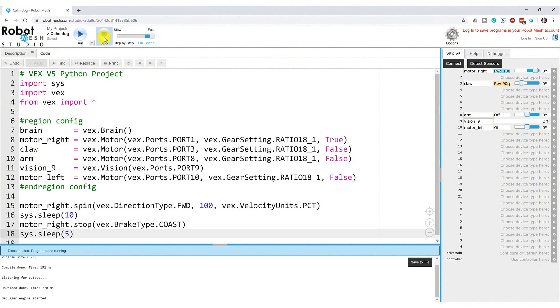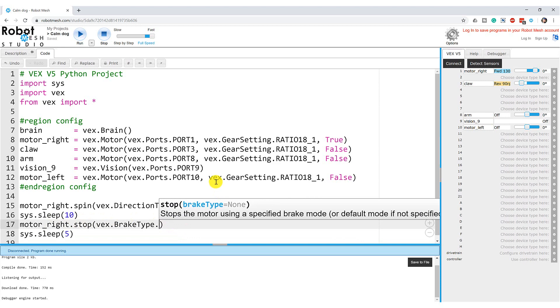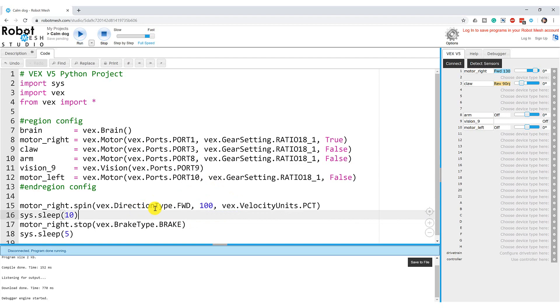As you can see that is the default action so it was very hard to notice any discernible difference but what happens if I come back here and I change this brake type from coast to brake. Let's run this program again and note the difference.